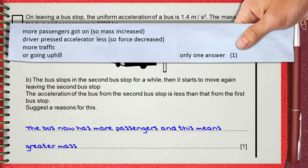If you say more passengers got on, so mass increased. You can also say driver pressed accelerator less, so the force decreased.